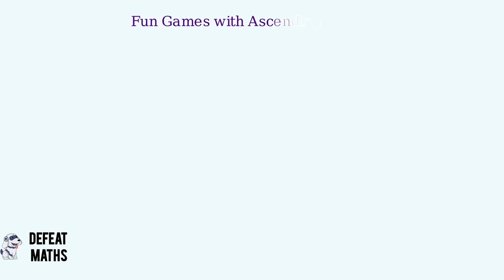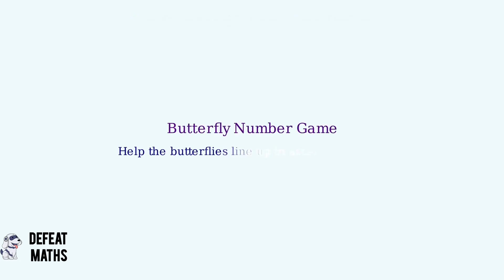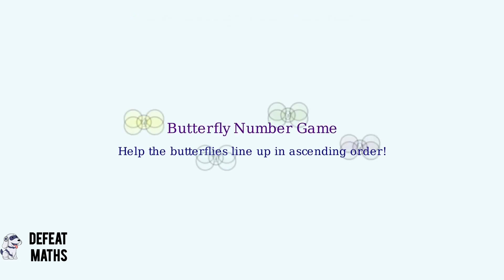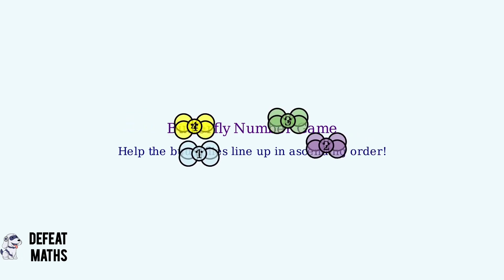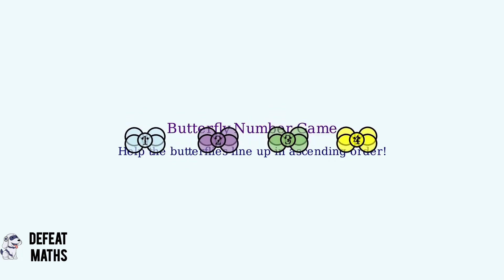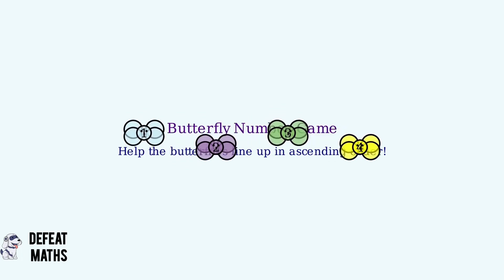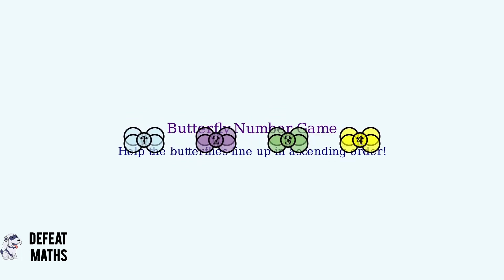Let's play some fun games with ascending order. In our first game, these butterflies need to line up in ascending order. Can you help them? Let's watch as they fly into the correct ascending order: one, two, three, four. Great job with the butterflies!